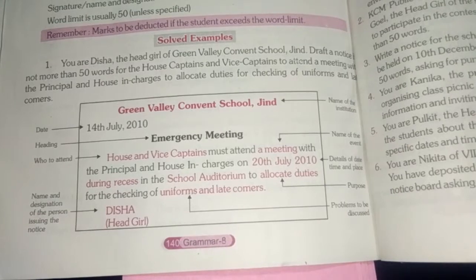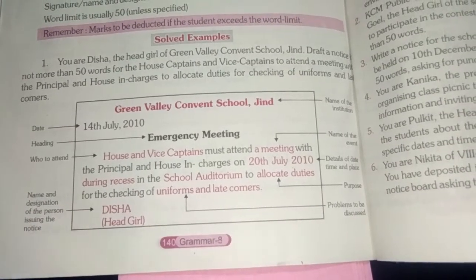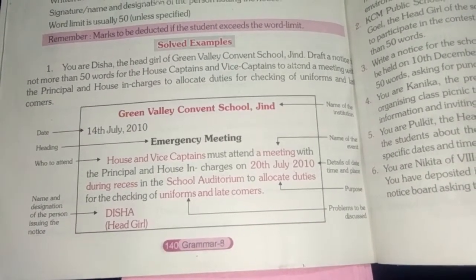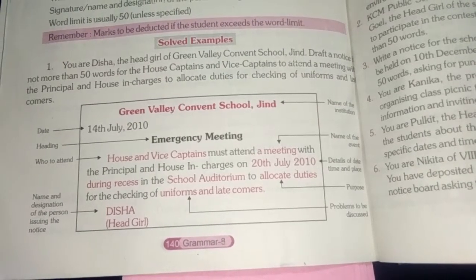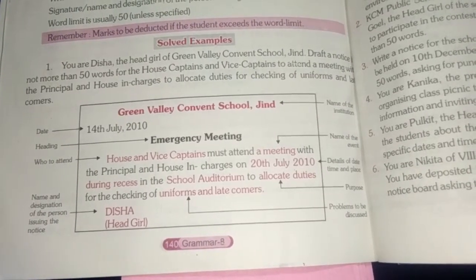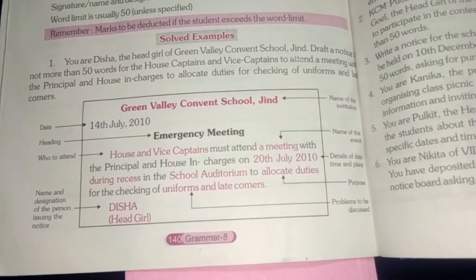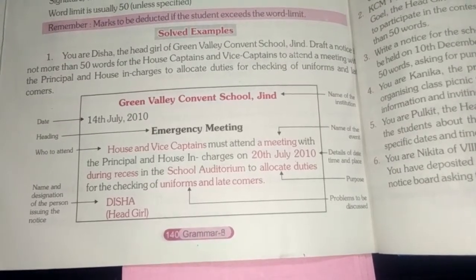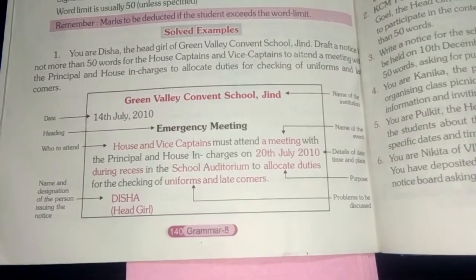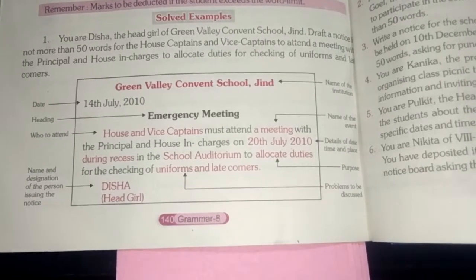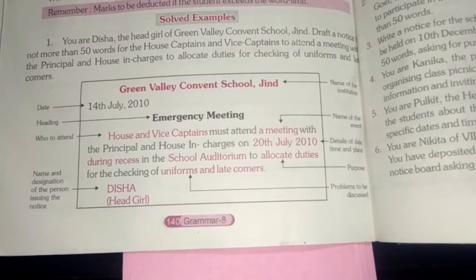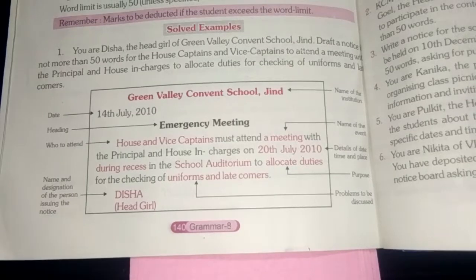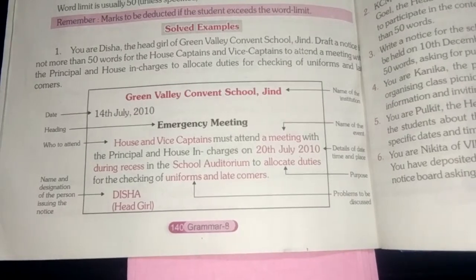Sixth: why is the meeting — to allocate duties. And what duties — to check uniforms and latecomers. So within 50 words, you have covered all the details that anyone could think of, written in an orderly way. This is the format of a notice and how you will draft it from the question.